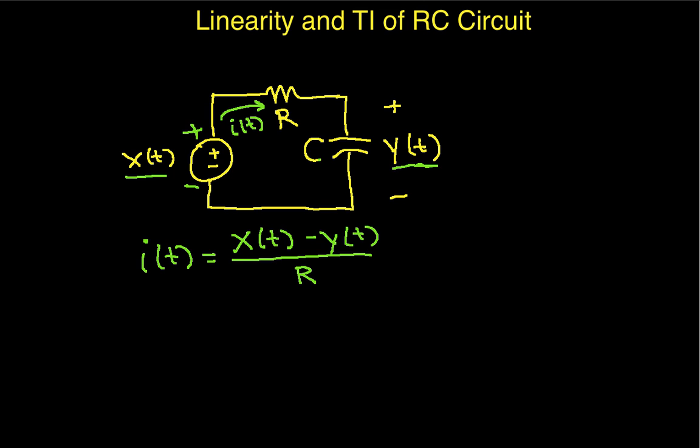We can also say i(t) is the current flowing through the capacitor. And you'll remember that current flowing through a capacitor is the capacitance times the derivative of the voltage across the capacitor. And this derivative is what's going to give us our differential equation.